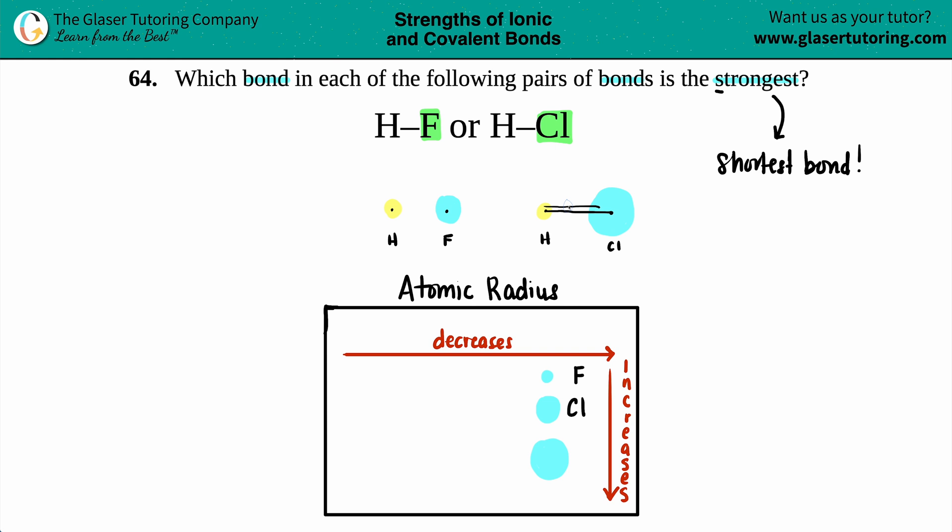Yes, okay, so HF is a shorter bond because the radius of fluorine is smaller. Fluorine is a smaller element, so the one that is smaller has the smaller radius. In this case, it's going to be HF. HF will have the smaller bond and therefore it will be called a stronger bond.